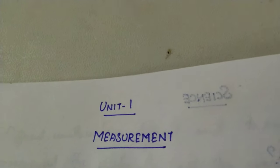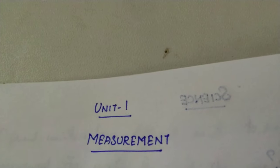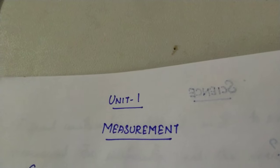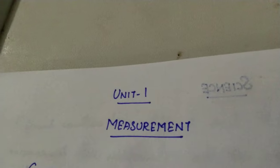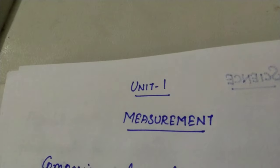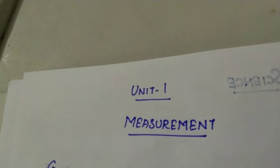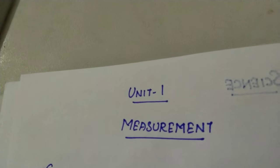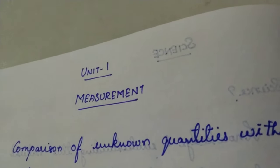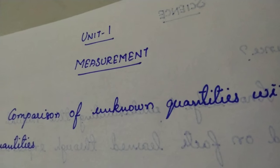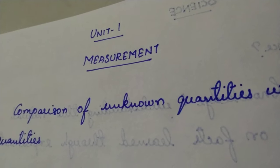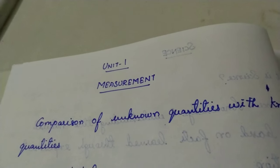Before getting into the definition, I will give you an example. You want to buy one kg of potato. You go to a shop and ask the shopkeeper for one kg of potato. He takes a beam balance, keeps a one kg weight on one side and your potatoes on another side. When both match, he gives you one kg of potato. That means it is the comparison of unknown quantity with known quantity. Here the unknown quantity is your potato, and the known quantity is the one kg weight. Simply, measurement can be said as the comparison of unknown quantities with known quantities.